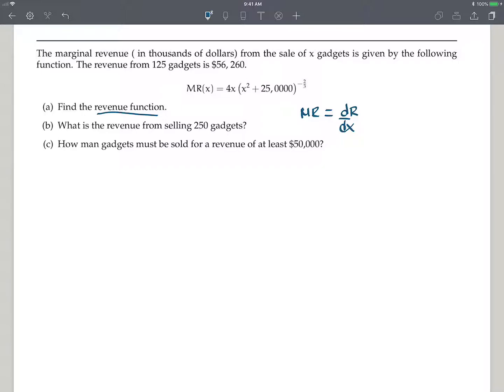So that means that in order to find the revenue function, we need to find the anti-derivative of this function that's given right here. So to do part A, all we have to do is solve. We want to integrate the 4x times x squared plus 25,000 to the minus 2/3. And this is in 13.2, so we already know by now how to do integration by u substitution. So that's what we have to do here.